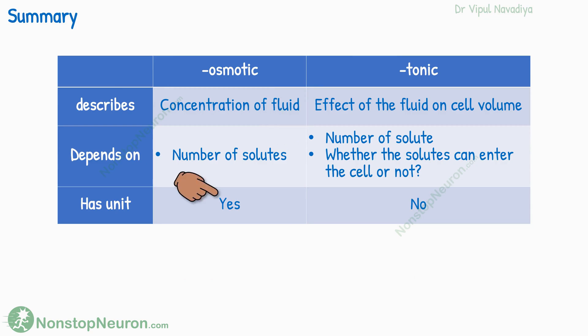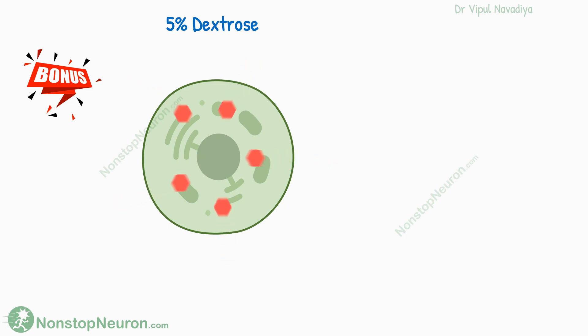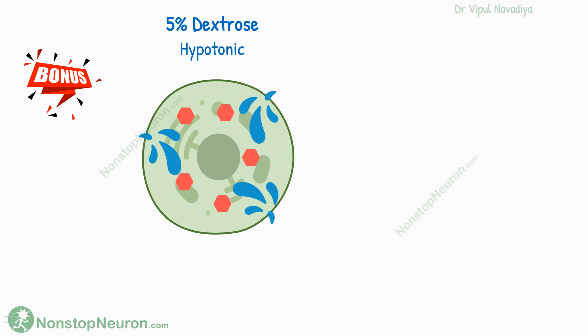The osmolarity has a unit, but tonicity has no unit. Now, here is a bonus point. Earlier, we saw that glucose entering the cell drags water along with it osmotically, so the 5% dextrose solution acts as a hypotonic solution. But that is not the whole story.